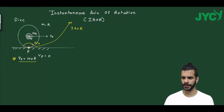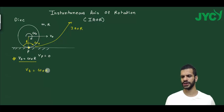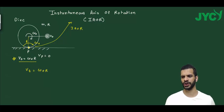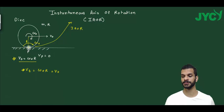The center of mass is at radius R from point P, so the tangential velocity of the center is omega_0 into R — which is basically the center of mass velocity V_0. This confirms the angular velocity about point P is omega_0.